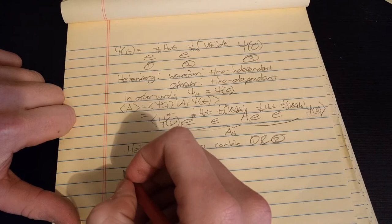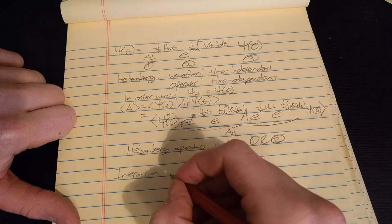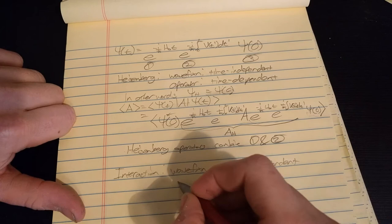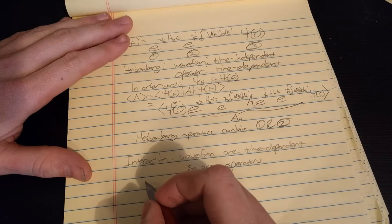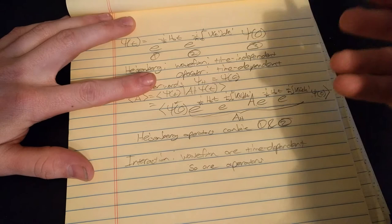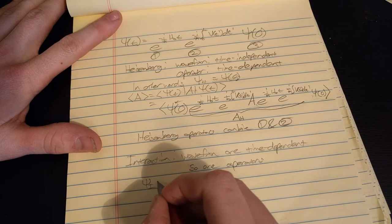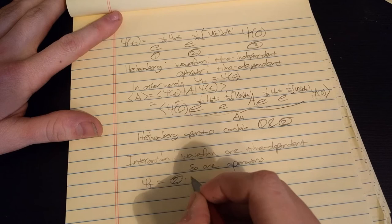The interaction picture is intermediate between these two, and you can probably guess where it's going. The wave functions are time-dependent and so are the operators. The interaction wave functions are parts 2 and 3 — and that's important, it's 2 and 3, not 1 and 3. The interaction wave function is part 2 times part 3, and the interaction right-witch is just part number 1.